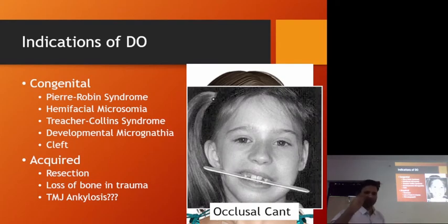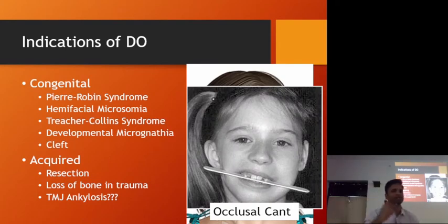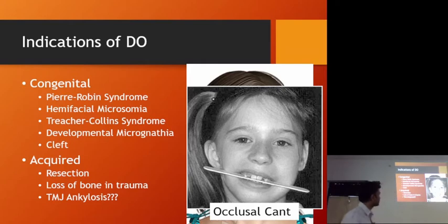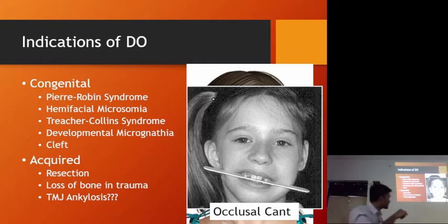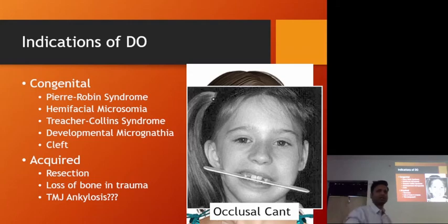In hemifacial microsomia, one side — maxilla and mandible both are deficient. The occlusion is slanting — this is called occlusal cant. Even this can be managed with distraction osteogenesis.